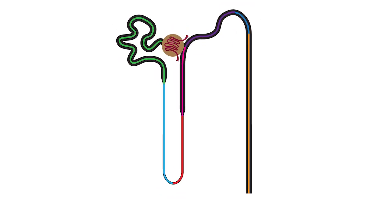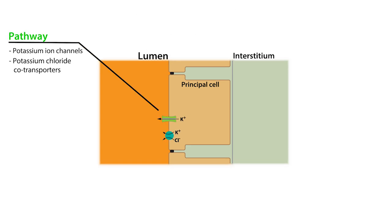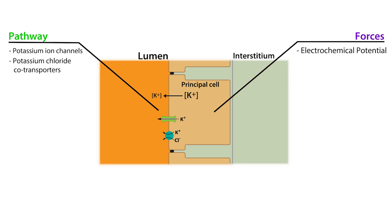Let's discuss the fundamental concepts needed to fully understand potassium secretion. The first concept is that most of the potassium is secreted into the lumen along the collecting duct by principal cells. Principal cells secrete potassium via potassium ion channels and potassium chloride co-transporters located in the apical membrane. The second concept is that potassium secretion is passive, and the main driving force is the electrochemical potential.